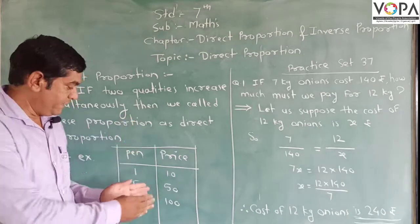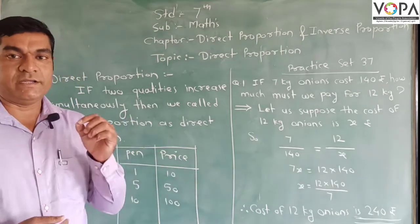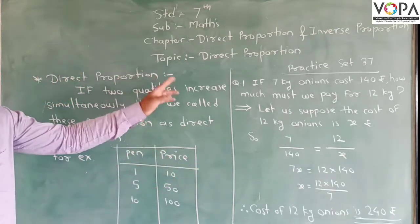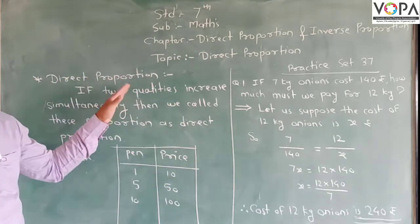In both quantities - in pens and in price - both quantities increase. That is why we call this type of variation as direct proportion or direct variation.